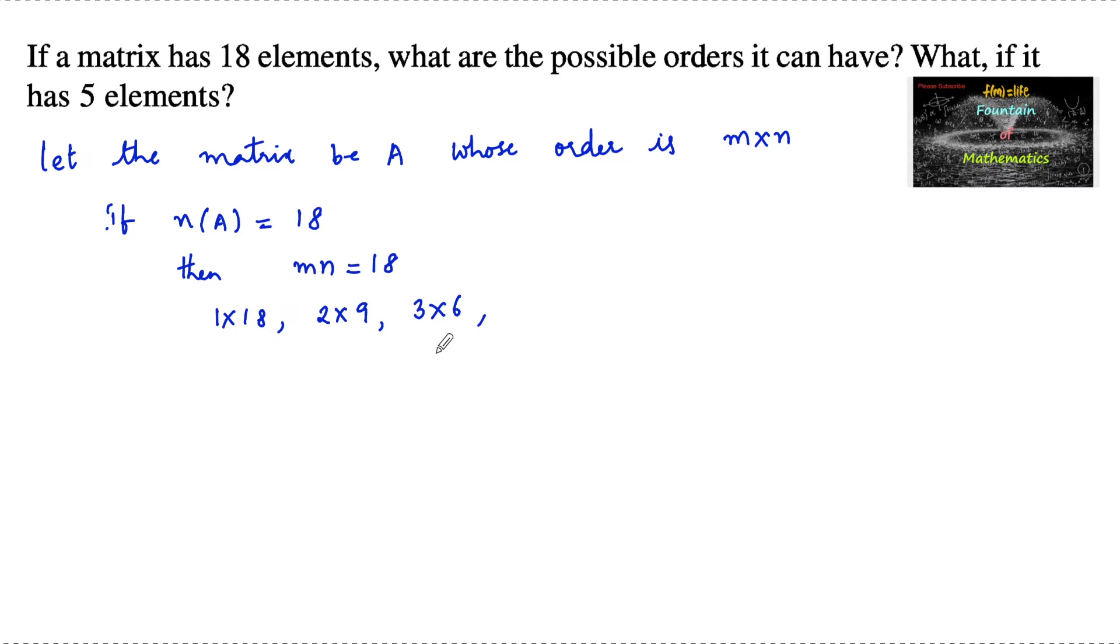And again, 6 into 3, 9 into 2, and 18 into 1. So we can consider here the orders that can be taken as 1 by 18, 2 by 9, 3 by 6, 18 by 1, 9 by 2, and 6 by 3.